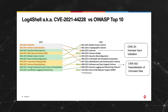You will also notice that in the latest 2021 version of OWASP top 10, the injection attack risk category has been downgraded to the third position compared to the top place it held in the 2017 ranking. But the Log4Shell attack proves how dangerous these vulnerabilities still are.